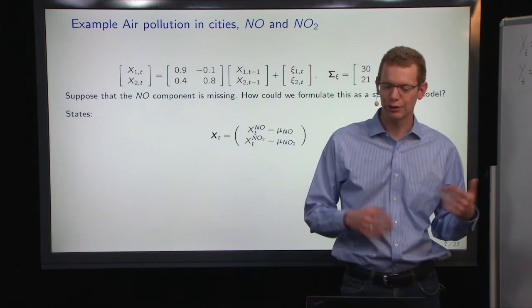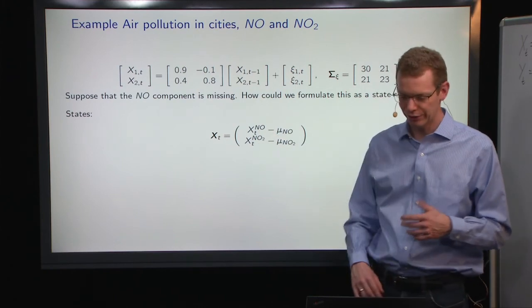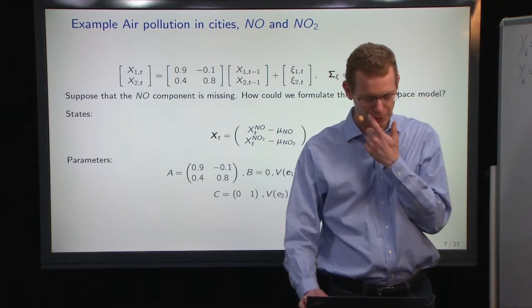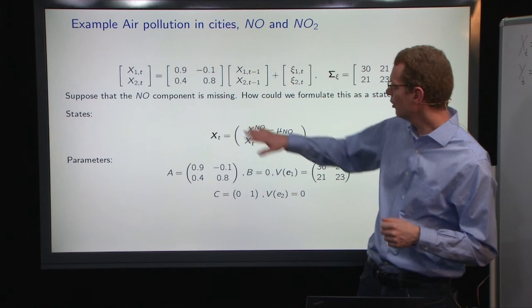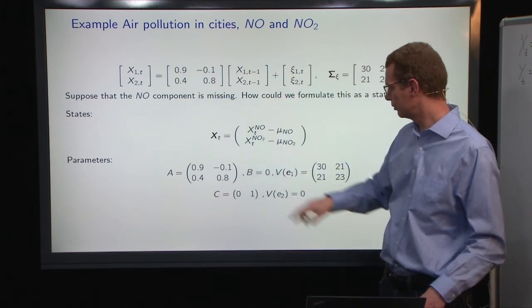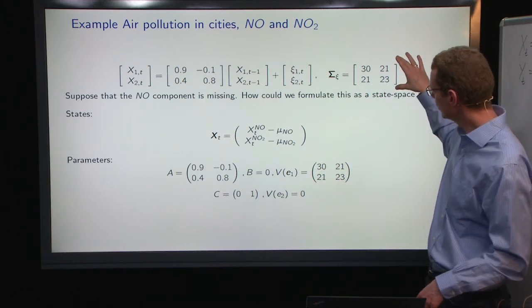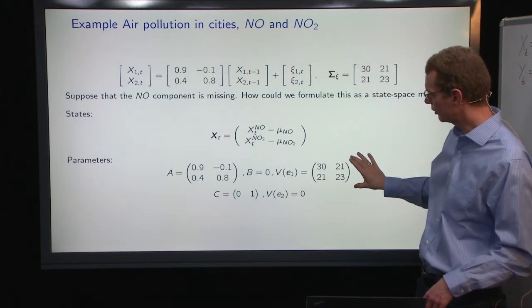So first of all we define the state, and we have the NO2 as the second state and NO as the first state in this case. So we have the parameter matrix A here. We don't have any input, so B becomes a zero. Then we have the variance of the system up here, covariance matrix for that noise.